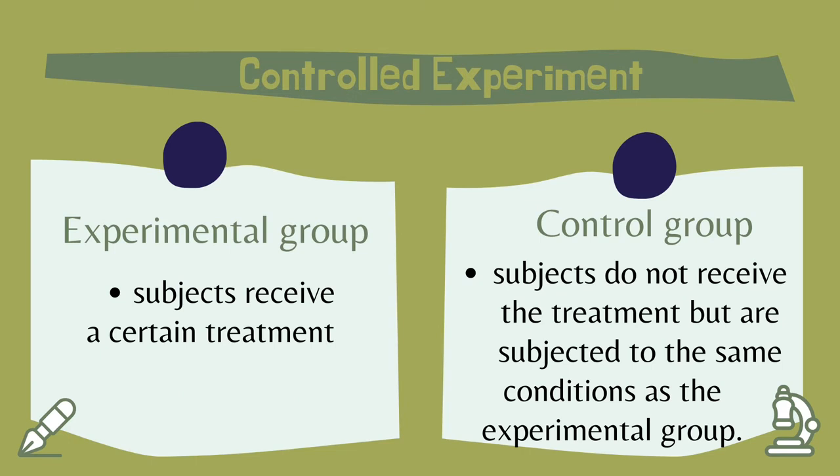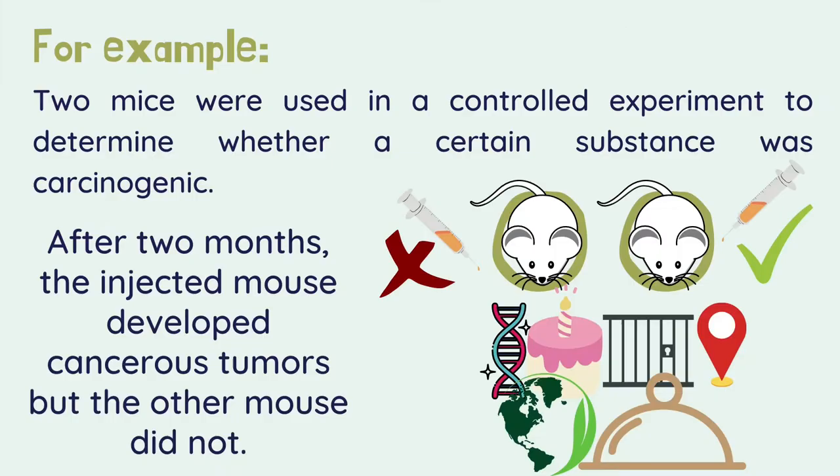A controlled experiment is one that involves two groups of subjects. In the experimental group, subjects receive a certain treatment. In the control group, subjects do not receive the treatment but are subjected to the same conditions as the experimental group. For example, two mice were used in a controlled experiment to determine whether a certain substance was carcinogenic.